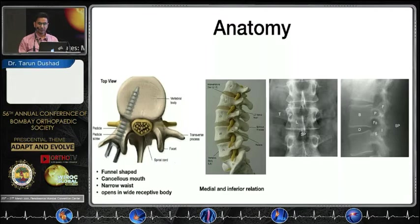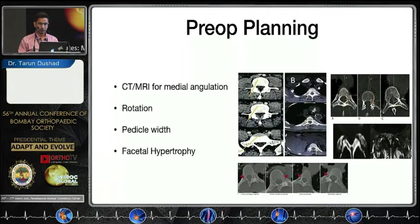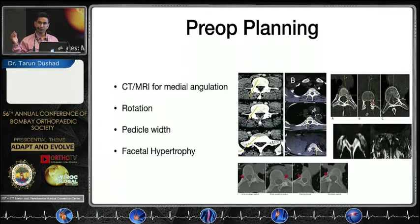You should know how to visualize the pedicle on C-arm: in a true AP view, the 'eyes of the owl' are the pedicles. Also locate facets and the transverse process in imaging. Whenever I do instrumentation in spine surgery, I always review preoperative CT and MRI for pedicle width, medial angulation, any vertebral rotation, or facetal hypertrophy which can make the entry point difficult.